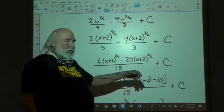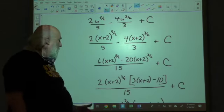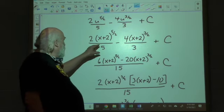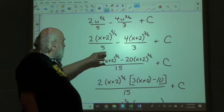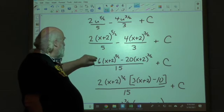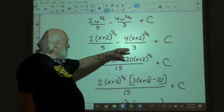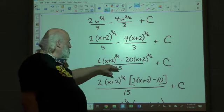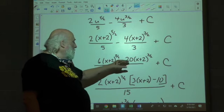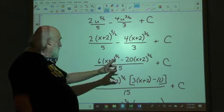Regardless, lowest common denominator, because we're subtracting fractions, is 15. And so, when we do that, we take 5 goes into 15 three times. 3 times 2 is 6. 3 goes into 15 five times. 5 times negative 4 is negative 20, plus c.